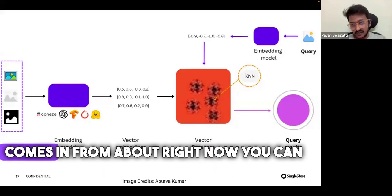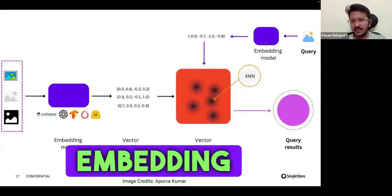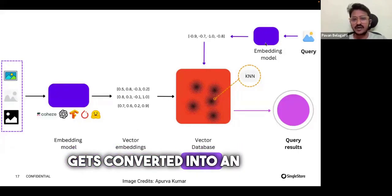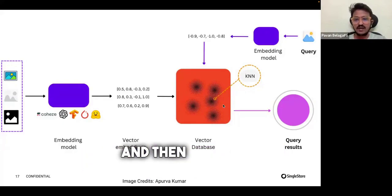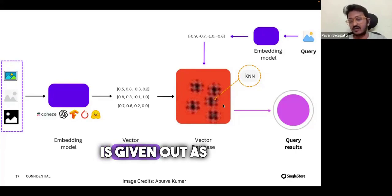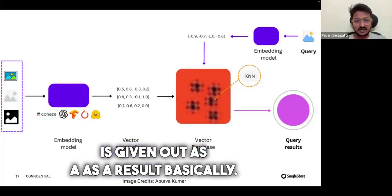Then when a user query comes in from above, it goes through an embedding model. Even the question gets converted into an embedding, and the search happens inside a vector database. Then the nearest, approximate nearest neighbor is given out as a result.